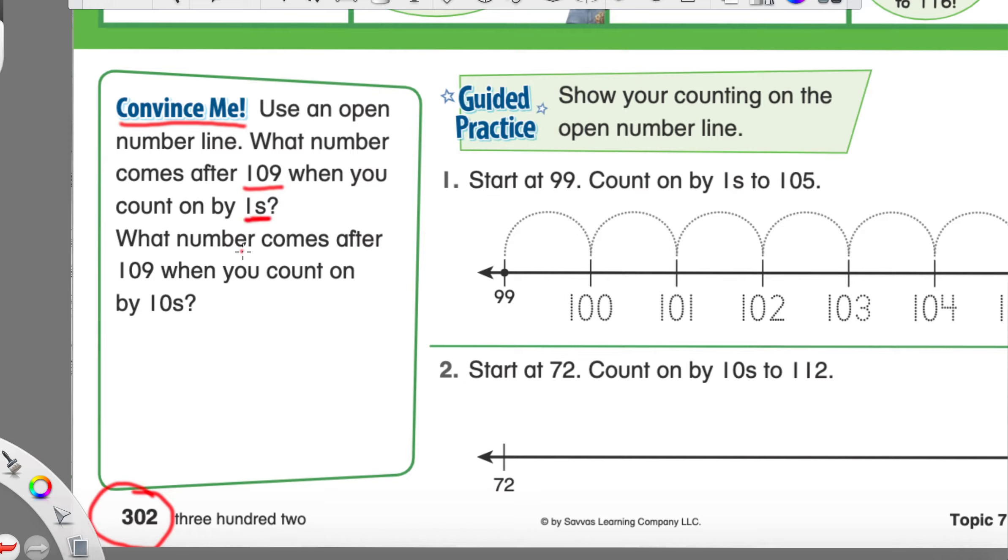And, then, what number comes after 109, or 109, when you count by 10s? So, let's do two short open number lines. If you want to go ahead and get a colored pencil, that's fine. Because, I'm going to use two different colors so we can really see the difference.